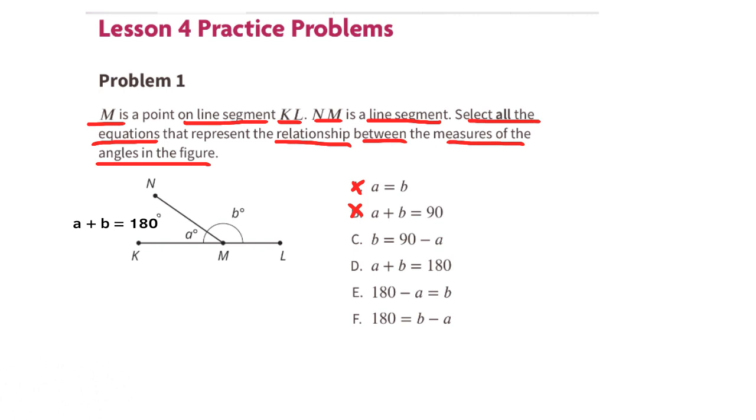C. B equals 90 minus A. Since A plus B equals 180 degrees, then B equals 180 degrees minus A, so B does not equal 90 minus A. D. A plus B equals 180. Yes, that's true. We've already identified that A plus B equals 180 degrees.